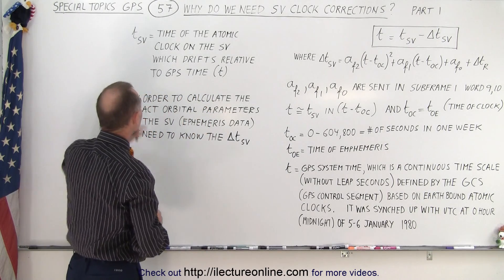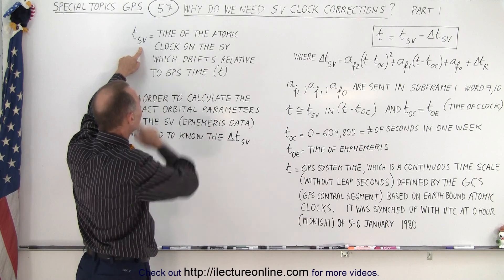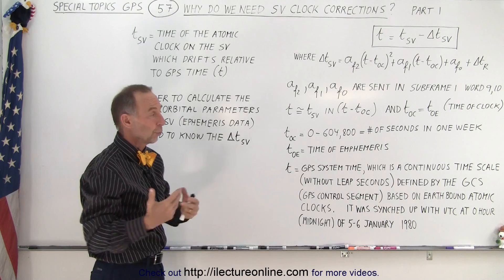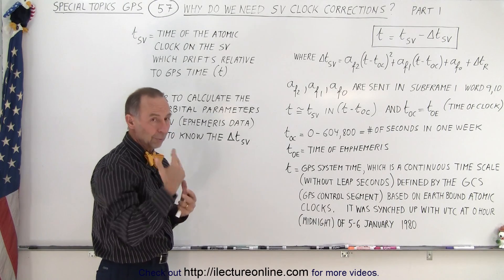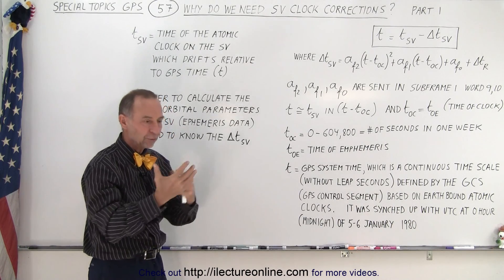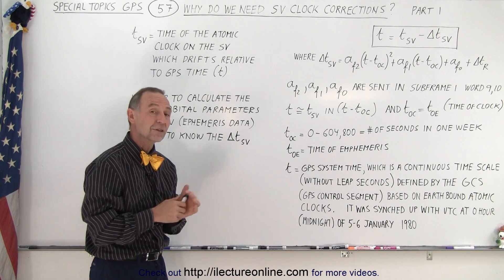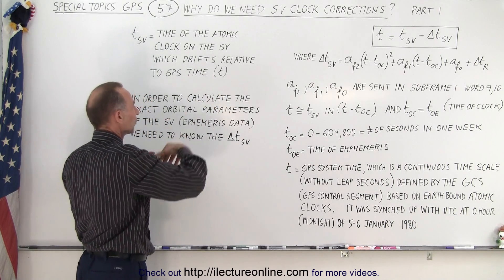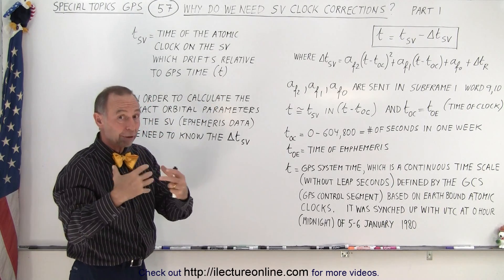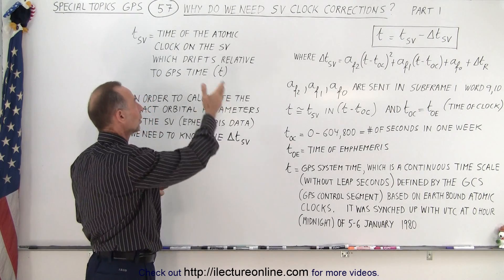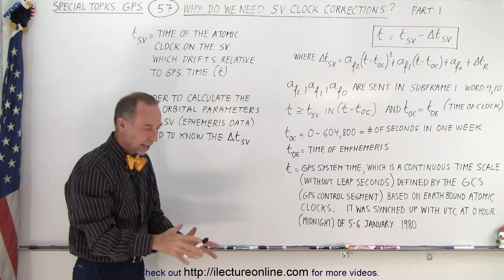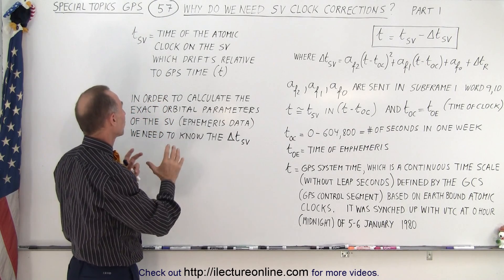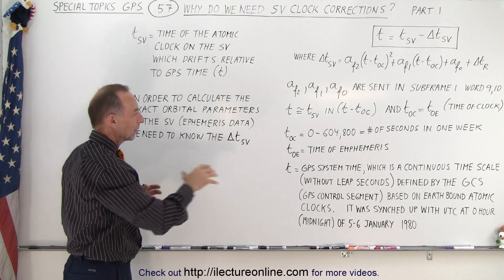The time on the SV atomic clock drifts relative to GPS time for several reasons: the satellite is subject to less gravitational force and is moving quite fast, so it must account for relativistic effects from both speed and gravity. There's also a general drift of the clock itself relative to a very good earth-bound atomic clock, because the clocks on the satellites are not as large or as precise as those on the ground.